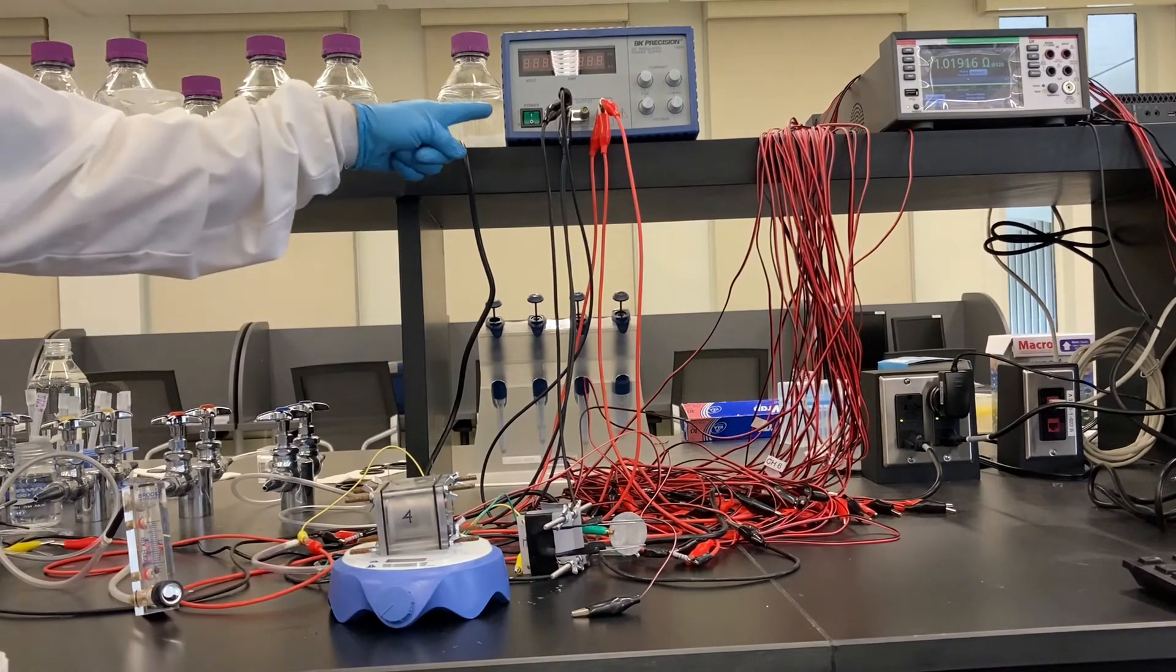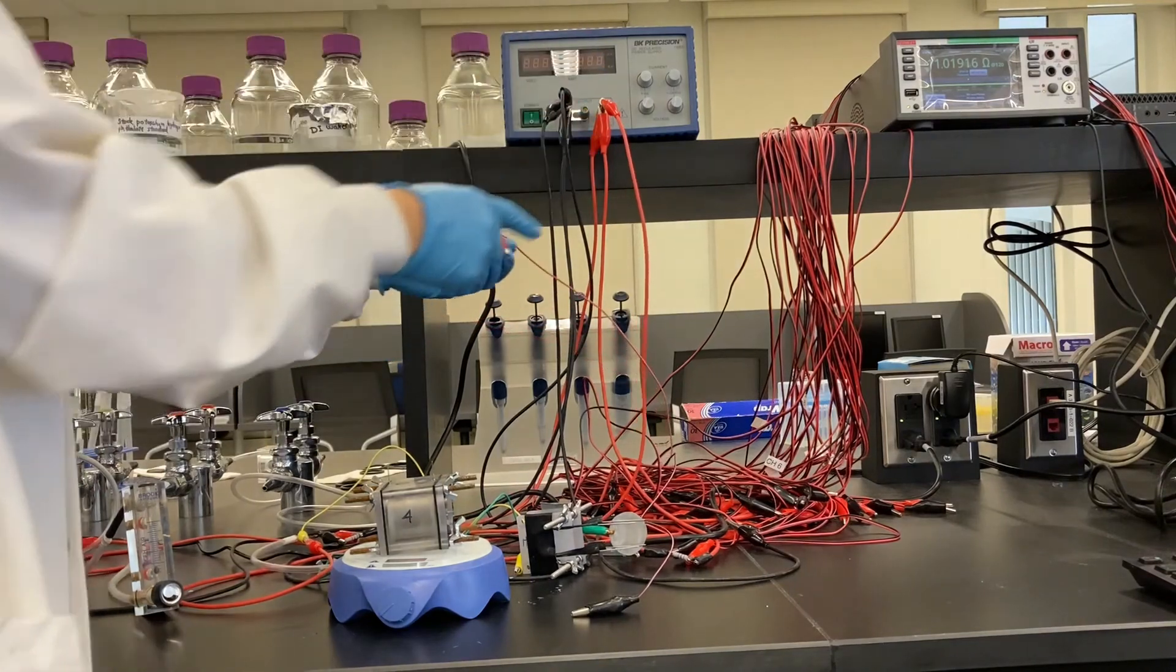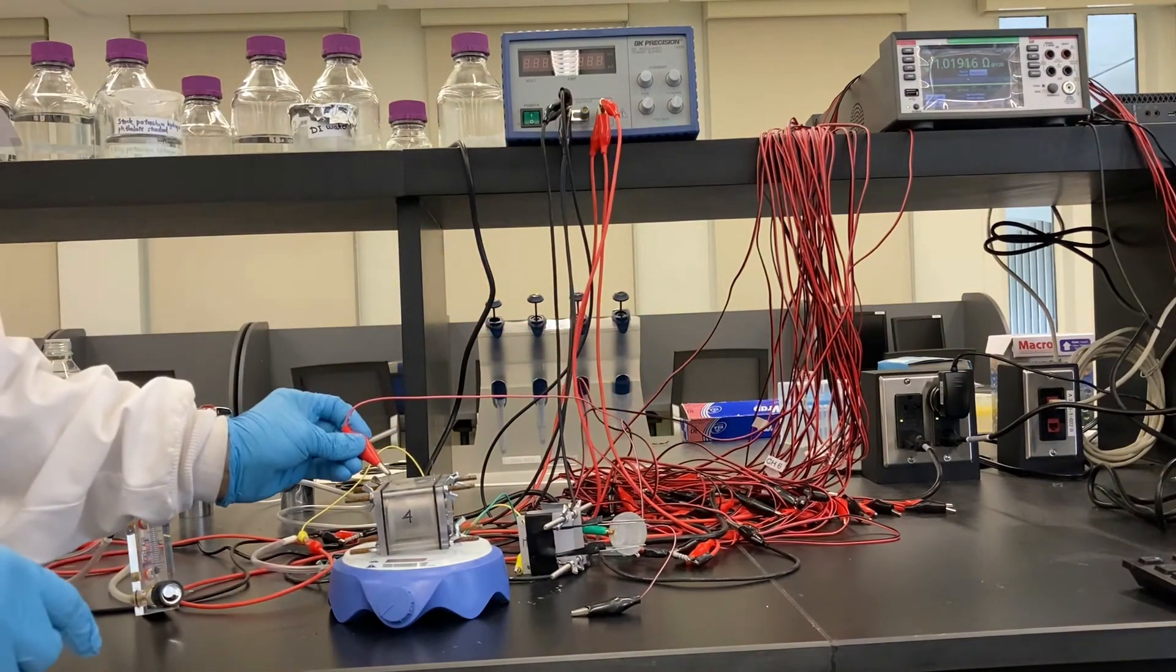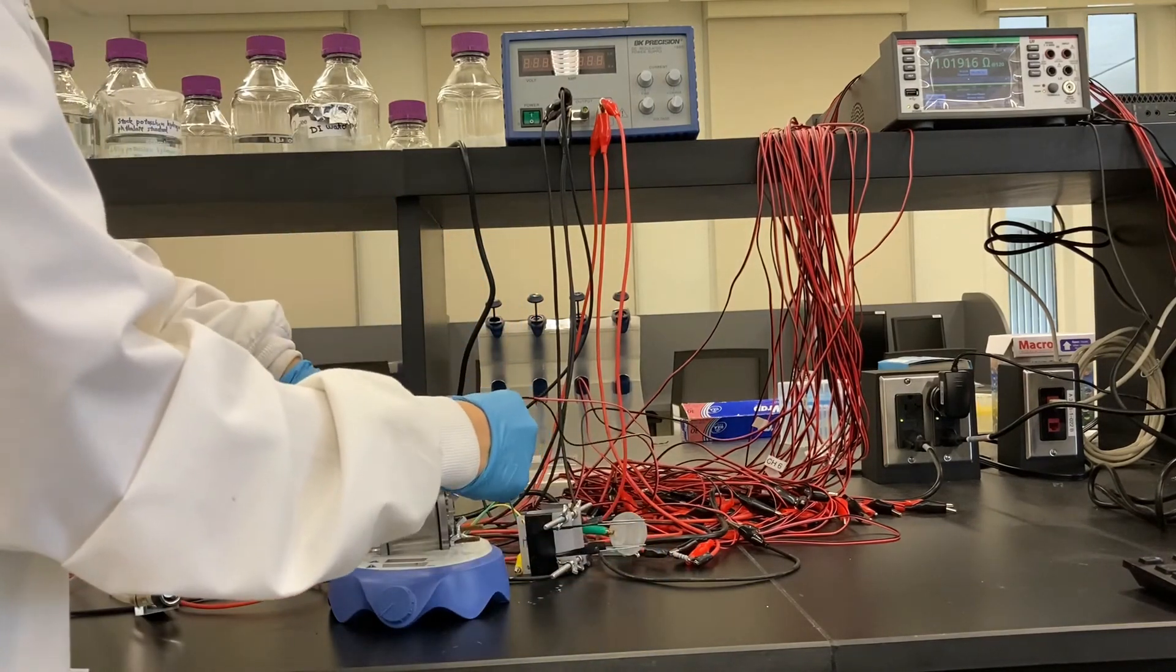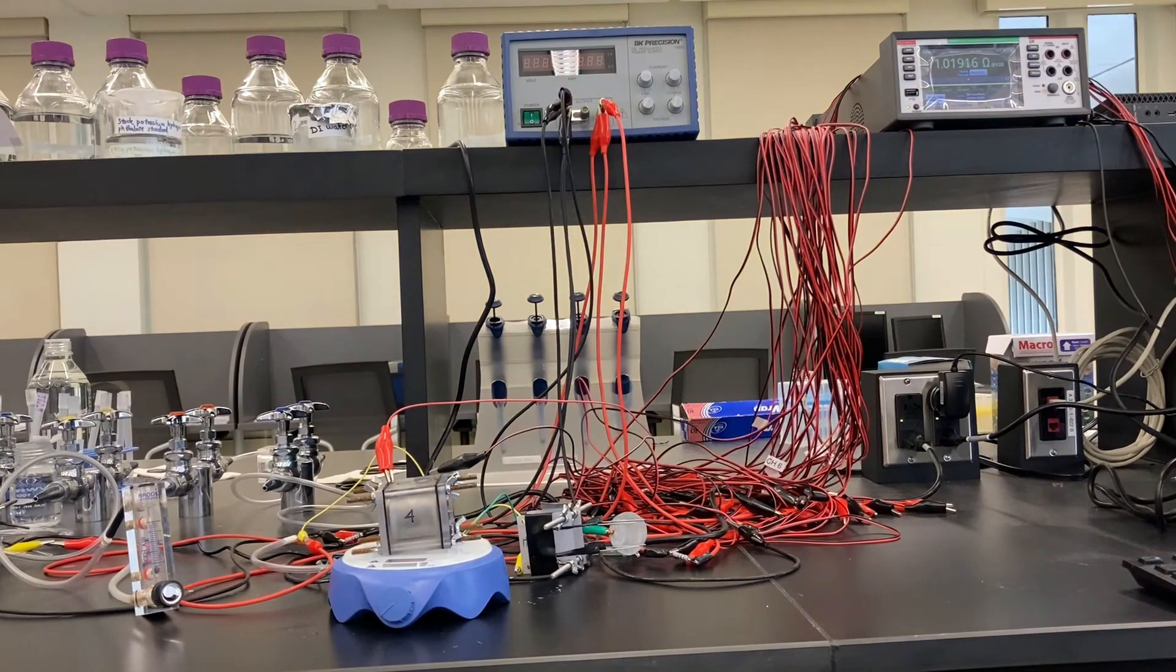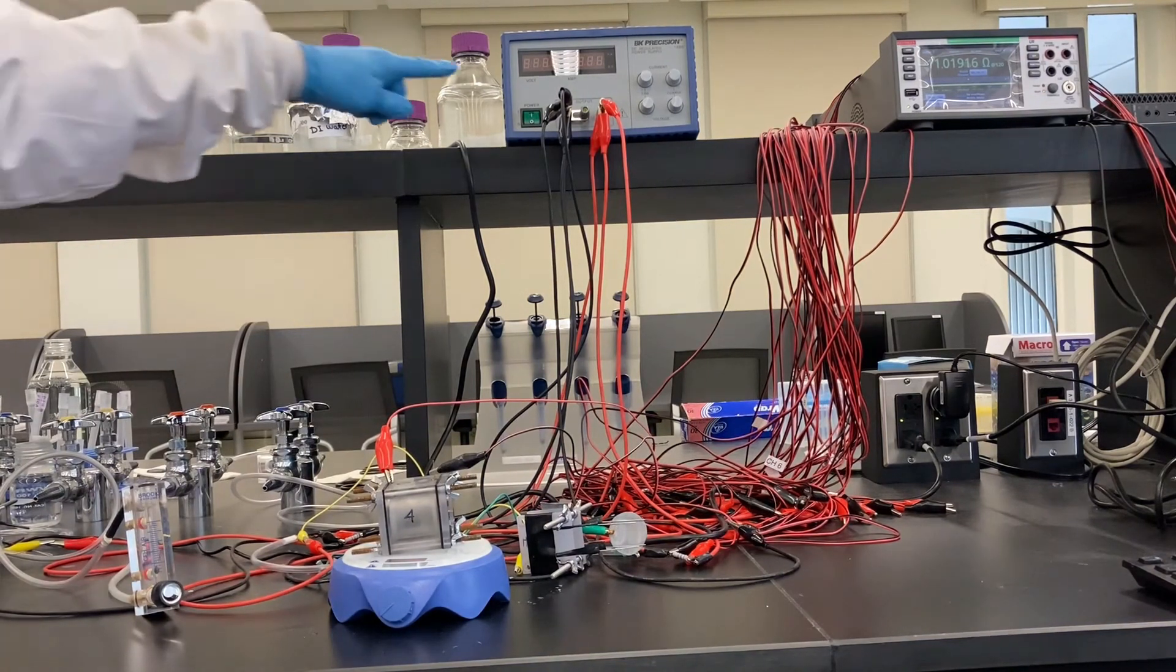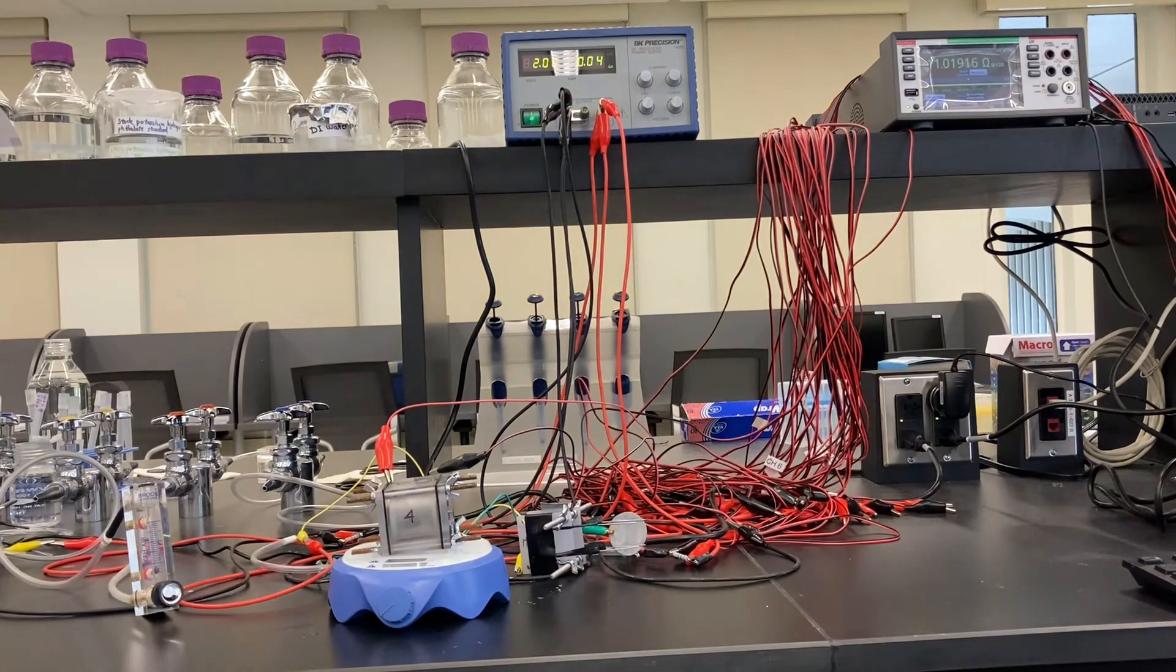And use a DC power supply to apply voltage to this reactor. Red plus goes to the metal anode, and black minus goes to the cathode. And turn on the power supply, and set the desired voltage. Now it is running.